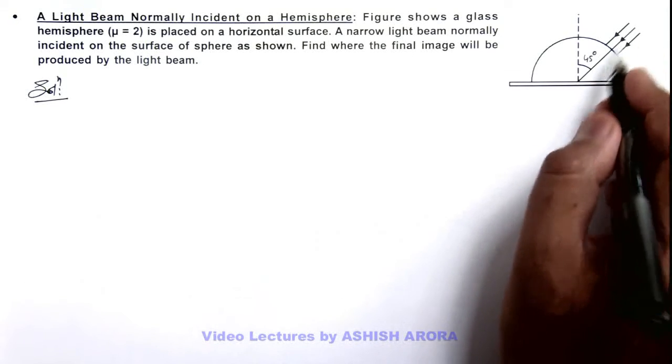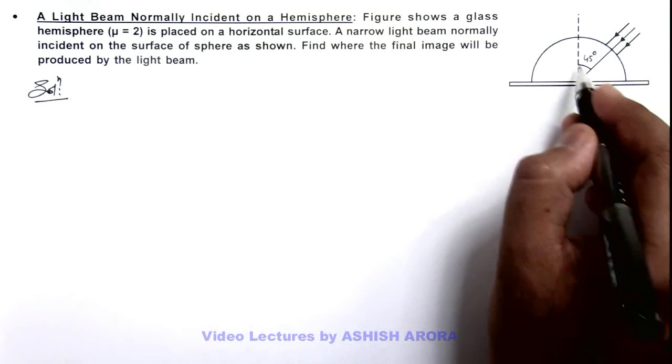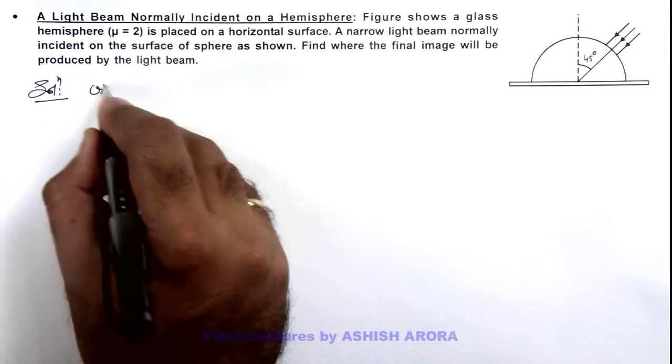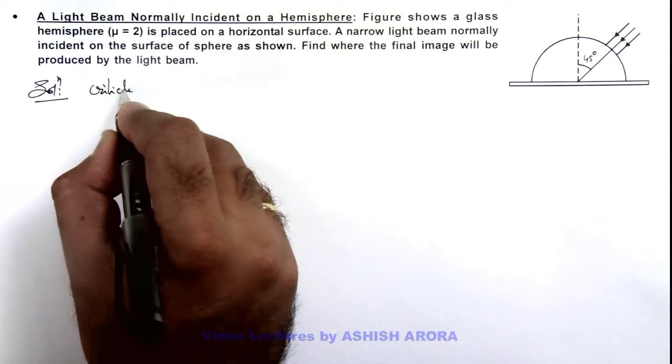We can see the light is incident on the base of this hemisphere at 45 degrees. If we calculate the critical angle for glass...